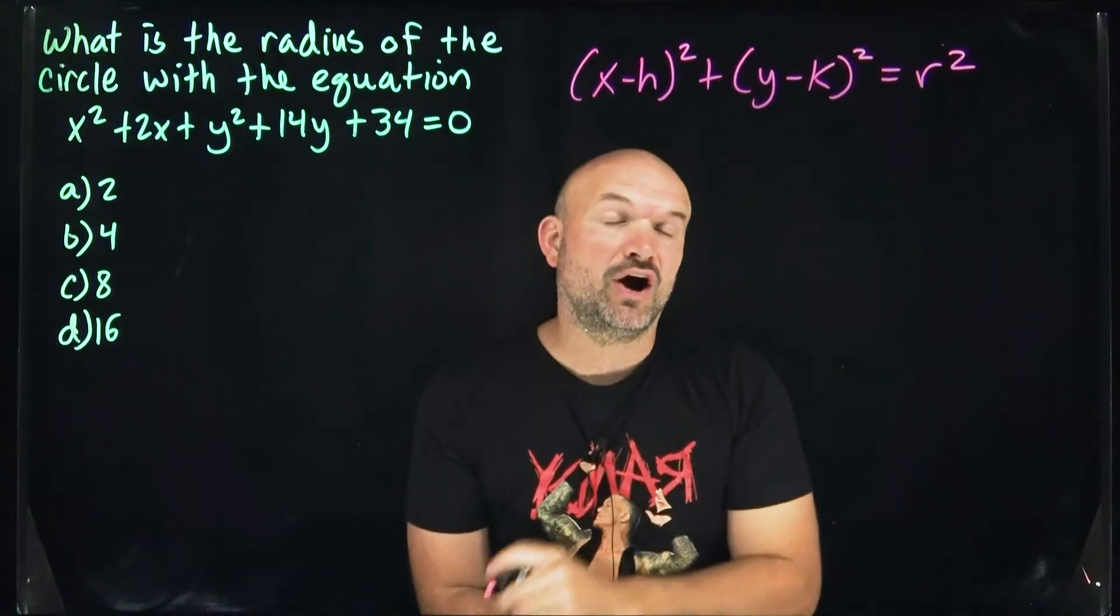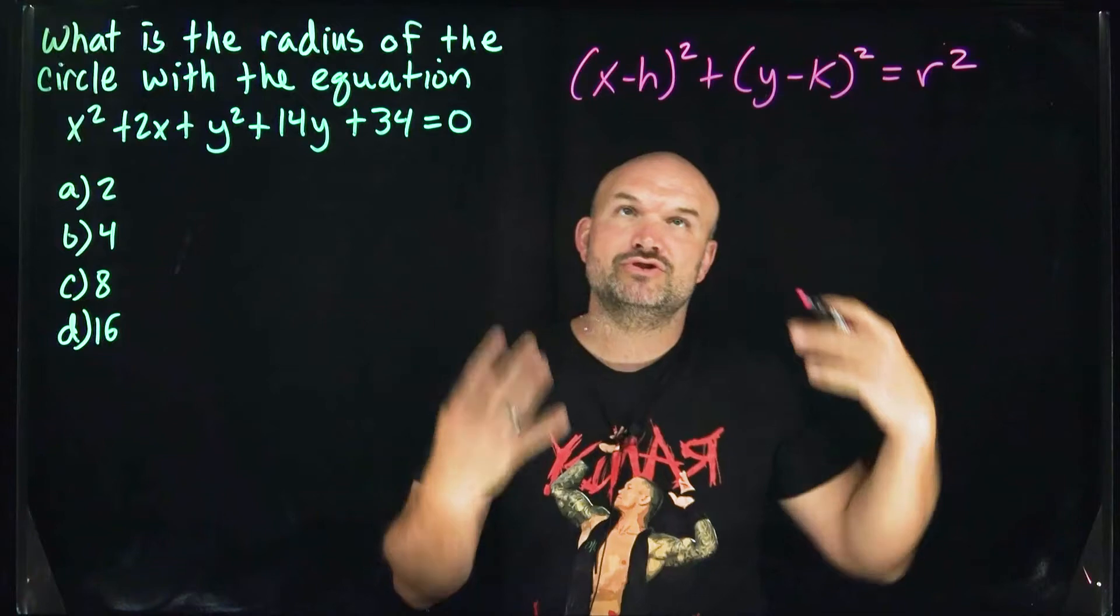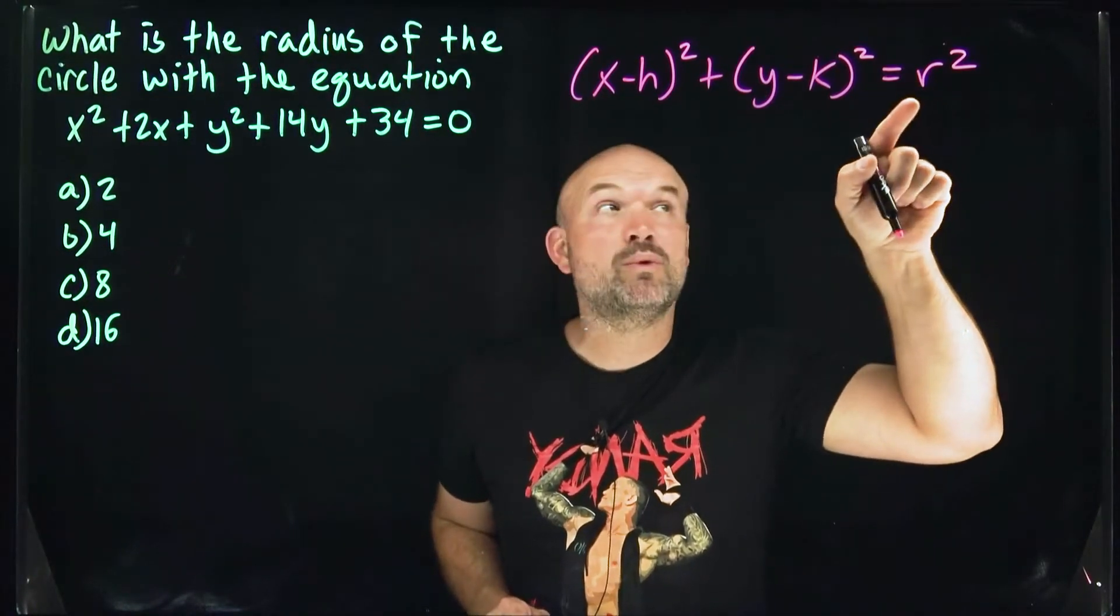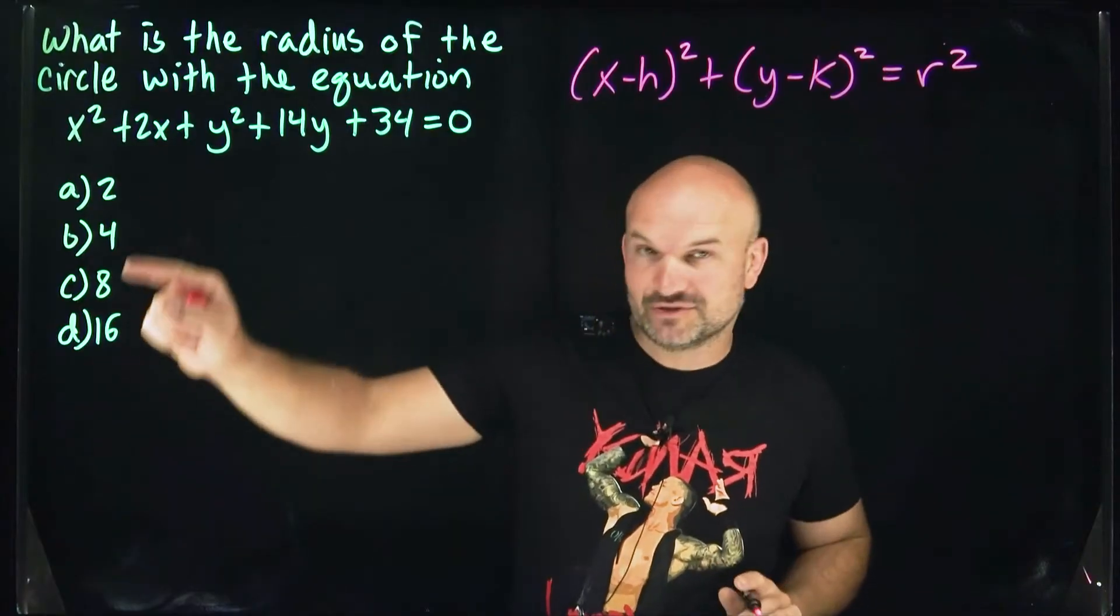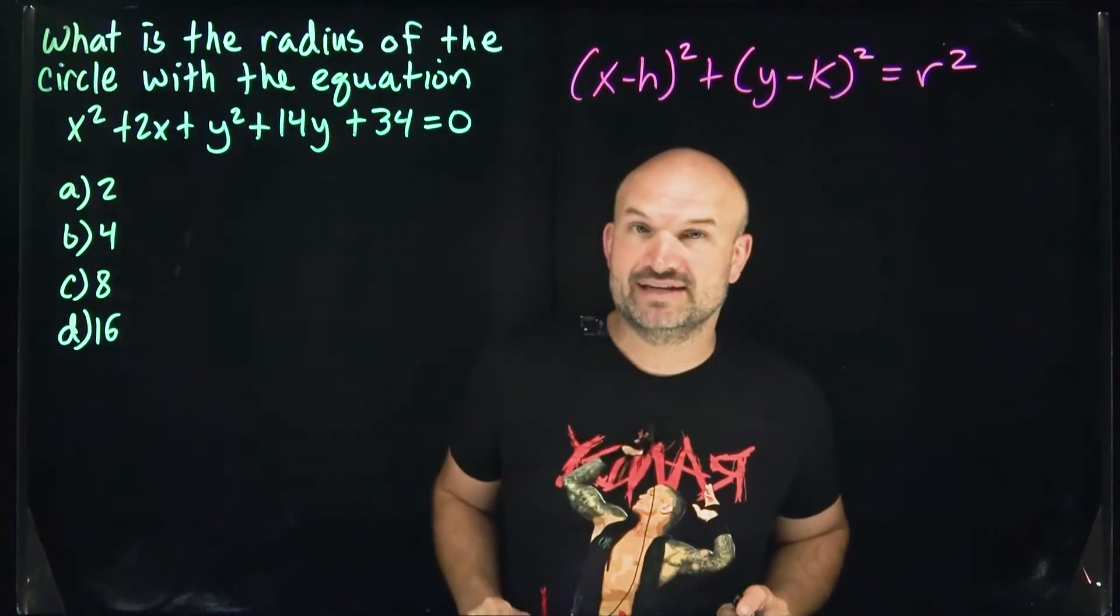Our equation does not have this form yet. Here, our r, which we're looking for, is squared. So once we put it into this format, you'll need to take the square root of r² to find your answer, because they're asking for the radius, not the radius squared.